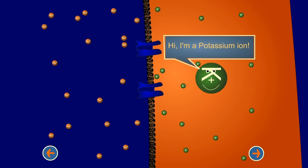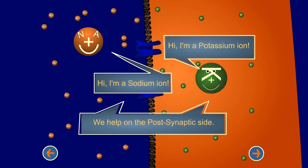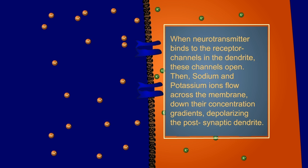Hi, I'm a potassium ion. Hi, I'm a sodium ion. We help on the postsynaptic side. When neurotransmitter binds to the receptor channels in the dendrite, these channels open. Then, sodium and potassium ions flow across the membrane, down their concentration gradients, depolarizing the postsynaptic dendrite.